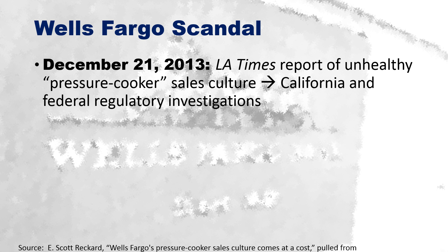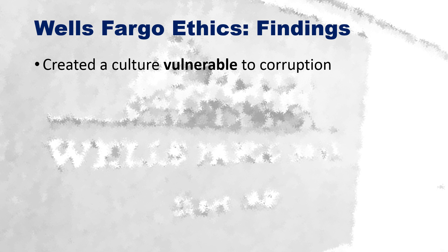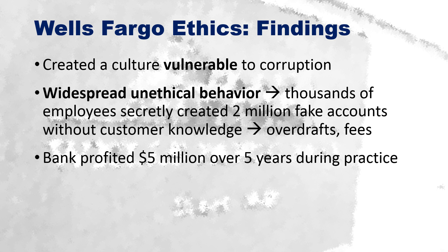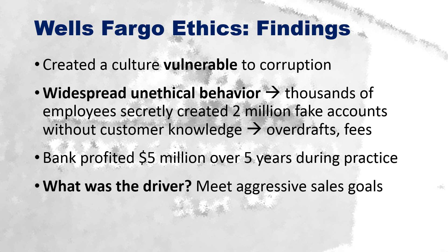On December 21, 2013, the Los Angeles Times reported an unhealthy 'pressure cooker' sales culture environment within Wells Fargo. This caused California and federal regulatory agencies to investigate. What they found was that the pressure cooker environment created a culture vulnerable to corruption, with widespread unethical behavior. Thousands of employees secretly created two million fake accounts without customer knowledge, which led to overdrafts and fees. The bank profited about five million dollars over five years from this practice.